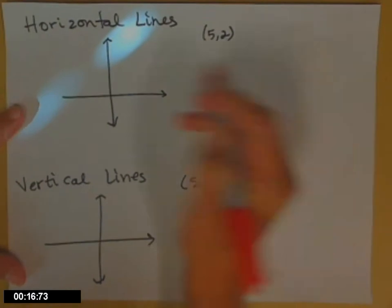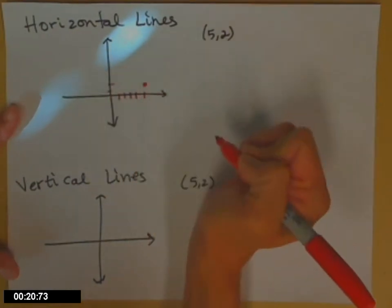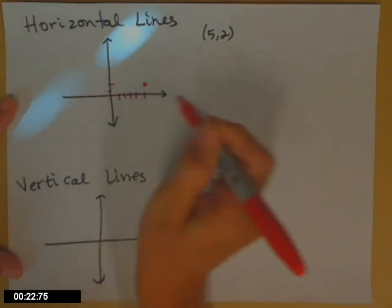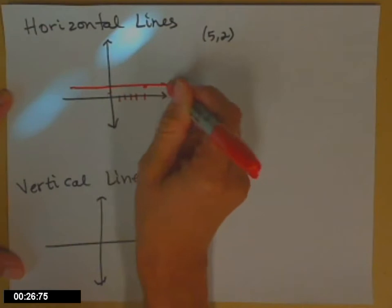So let's start by plotting the point (5, 2). Hand-drawing a horizontal line. Remember, horizontal lines look like the horizon. They go across.